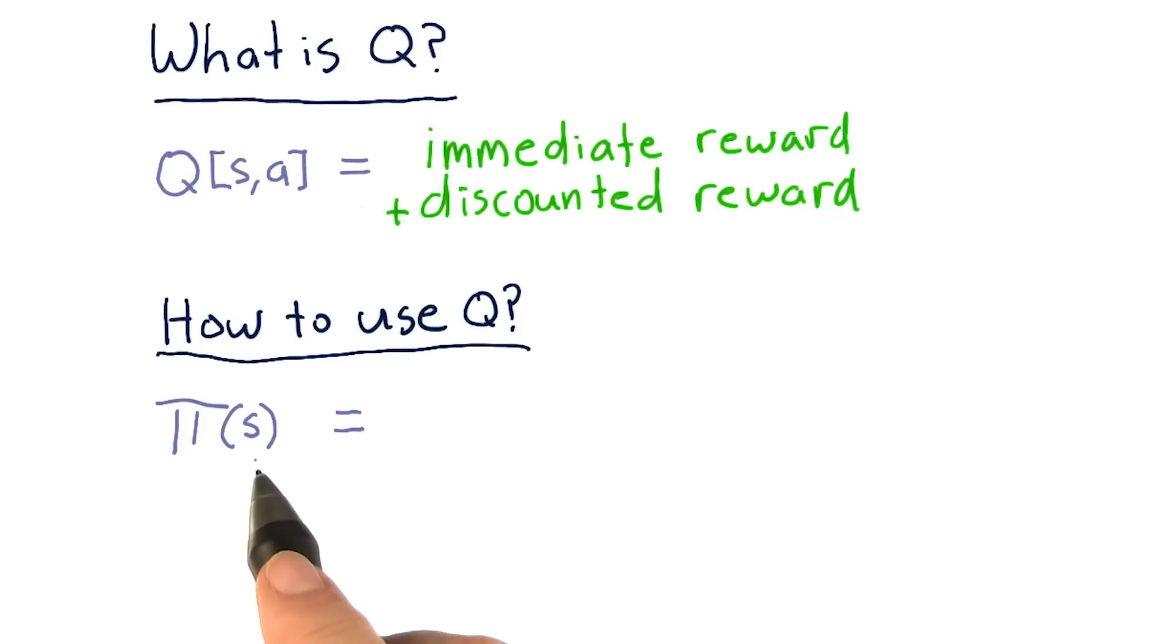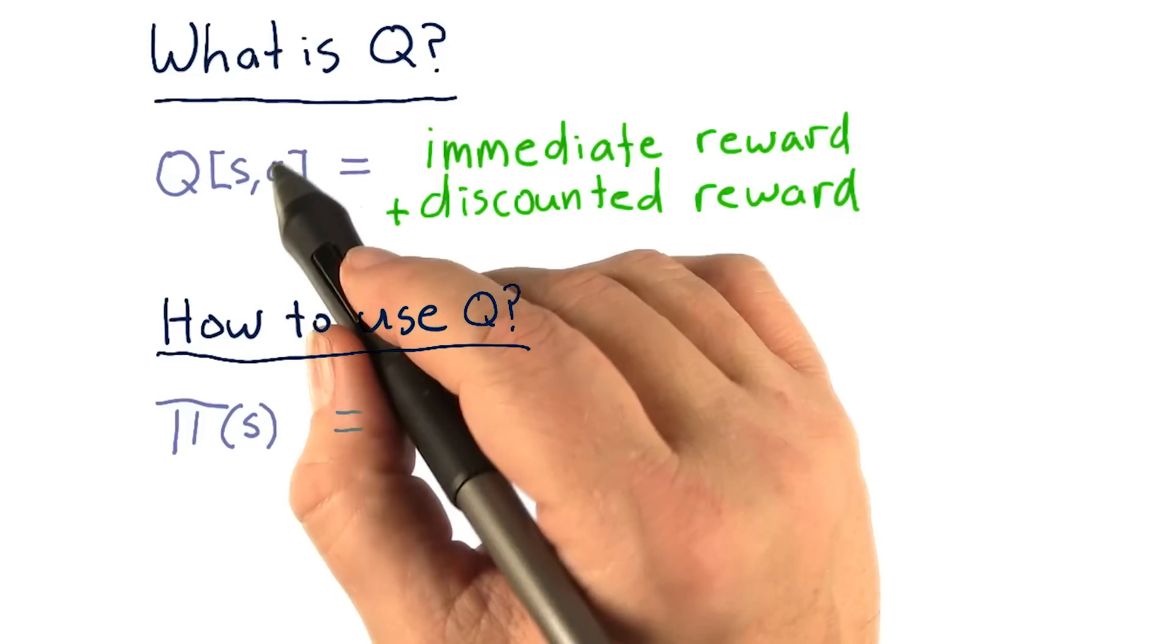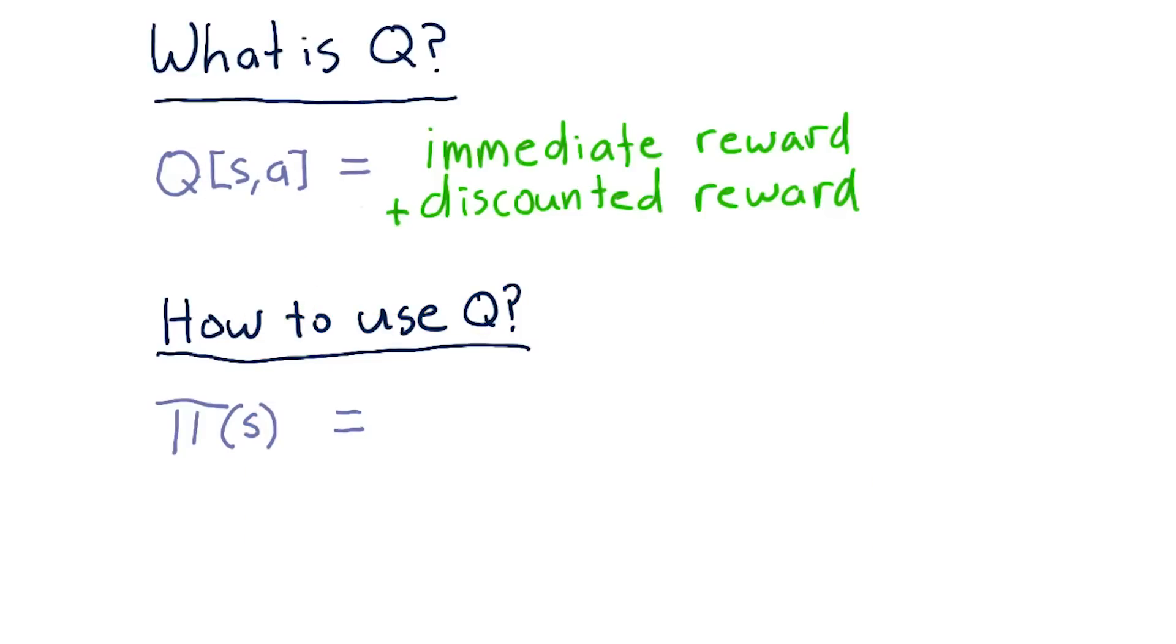And we represent the policy with pi. So pi of S means what is the action we take when we're in state S, or what is the policy for state S? And we take advantage of our Q table to figure that out.